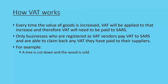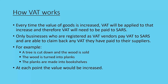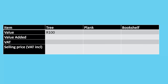A simple example: a tree is cut down and the wood is sold; the wood is turned into planks; those planks are made into a bookshelf. At each point the value is increased. To change a tree into a plank involves work — someone expects an increase in value. When planks are made into a bookshelf, labor is added, a markup is added, and so value is increased again.